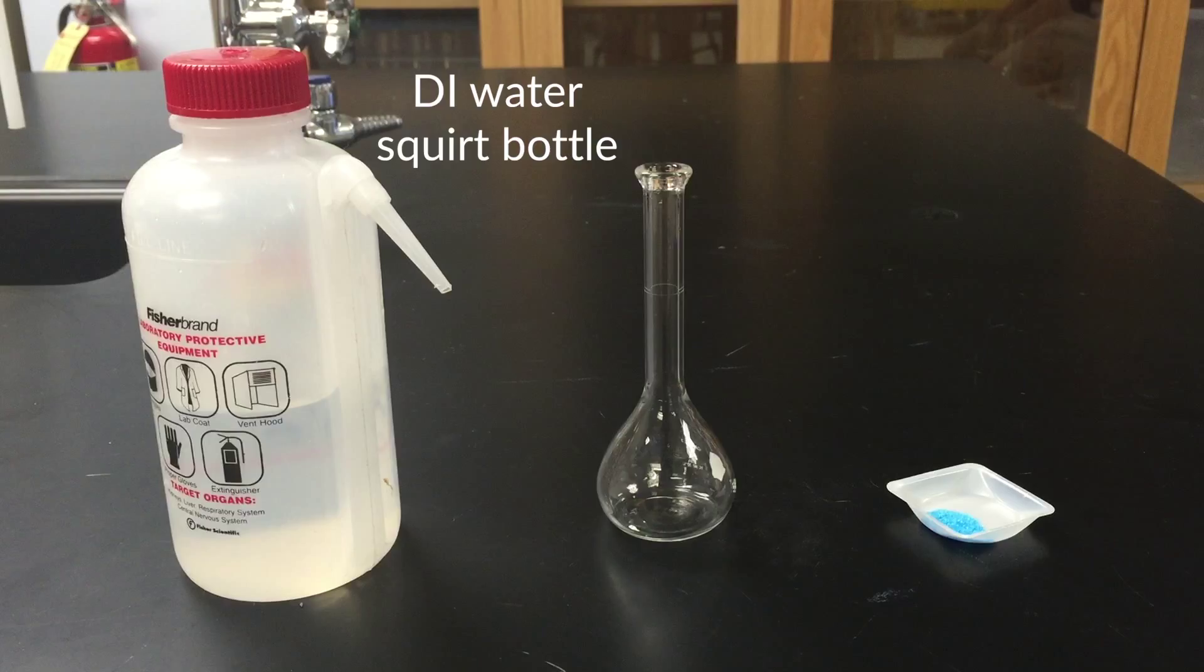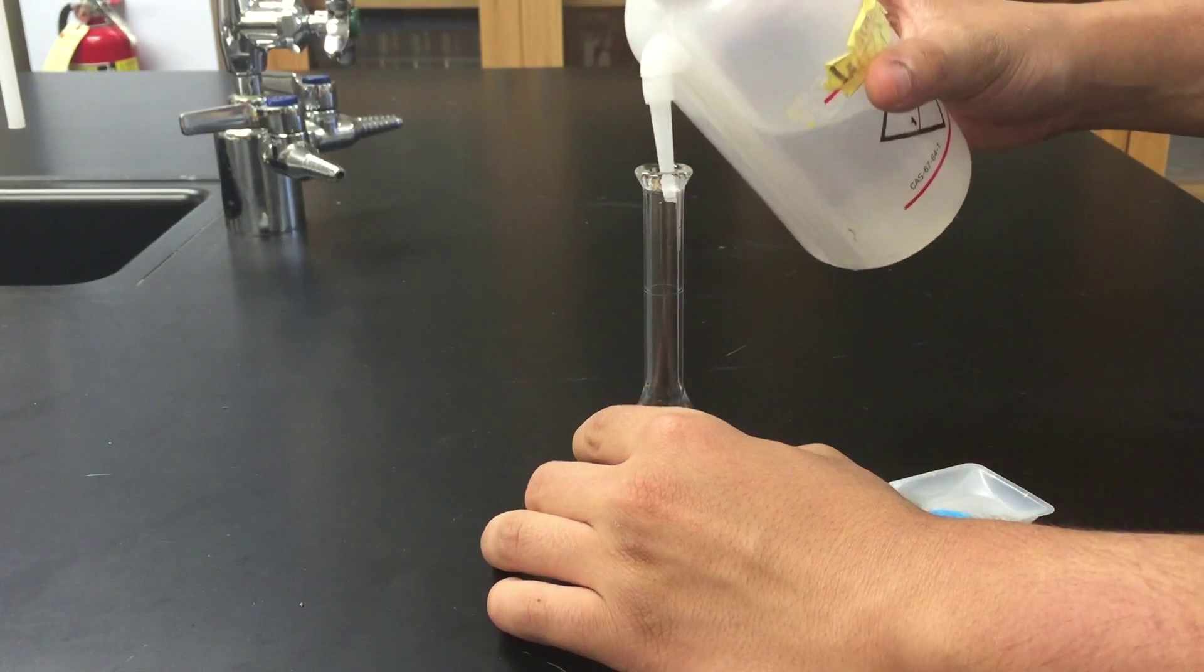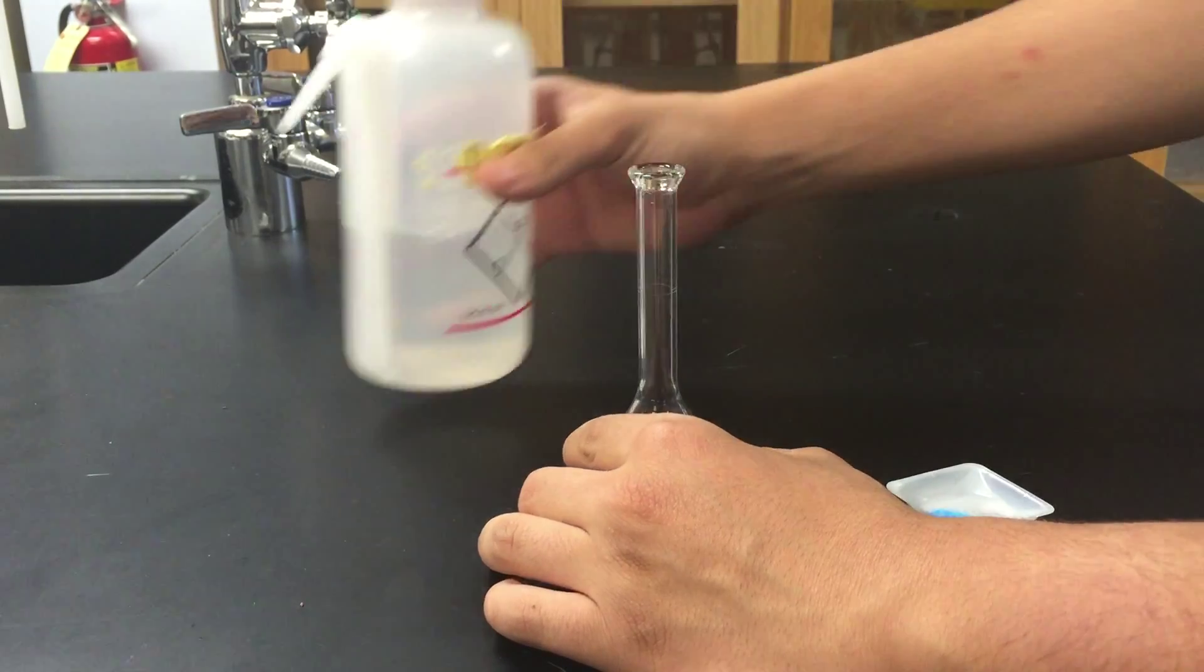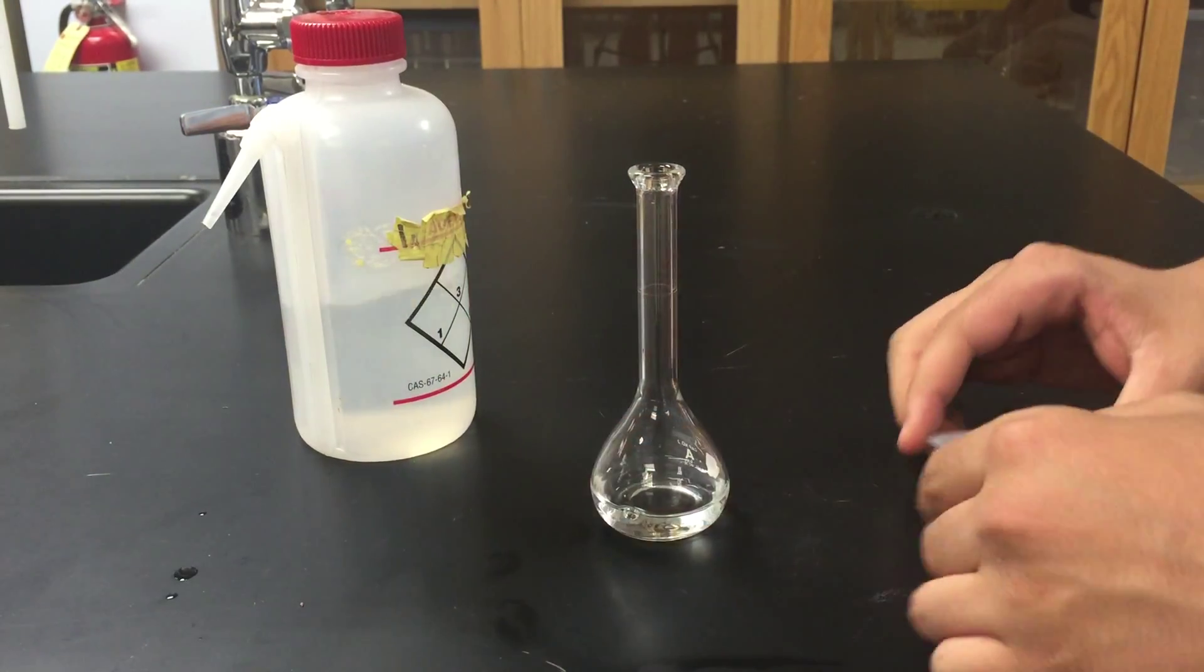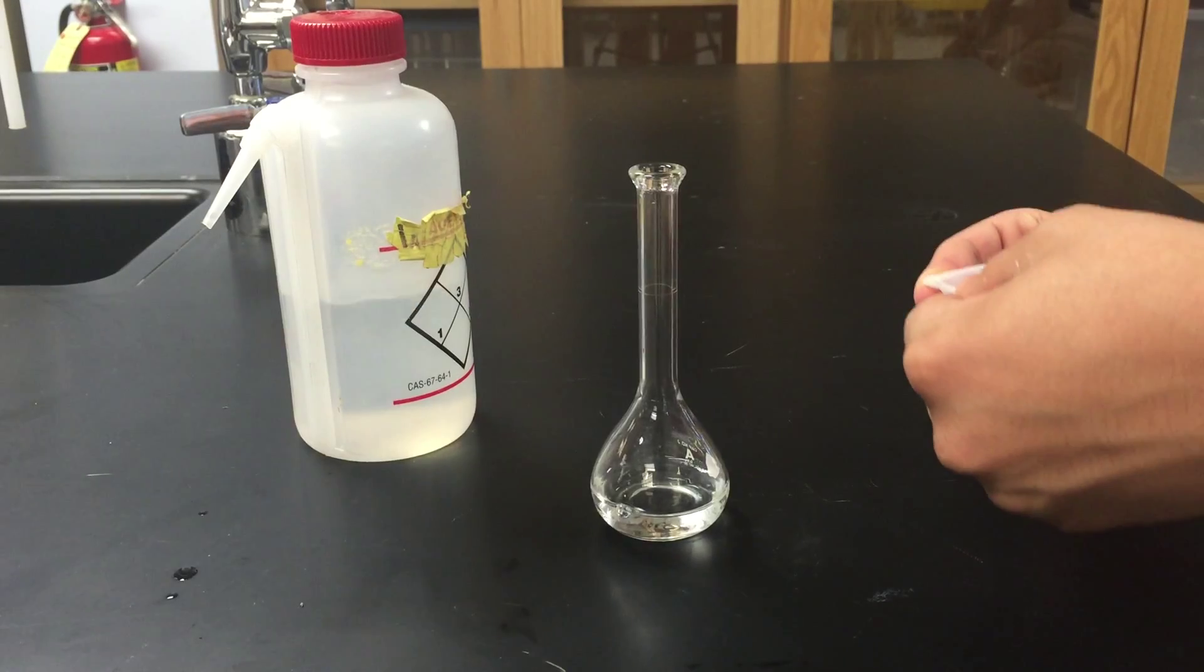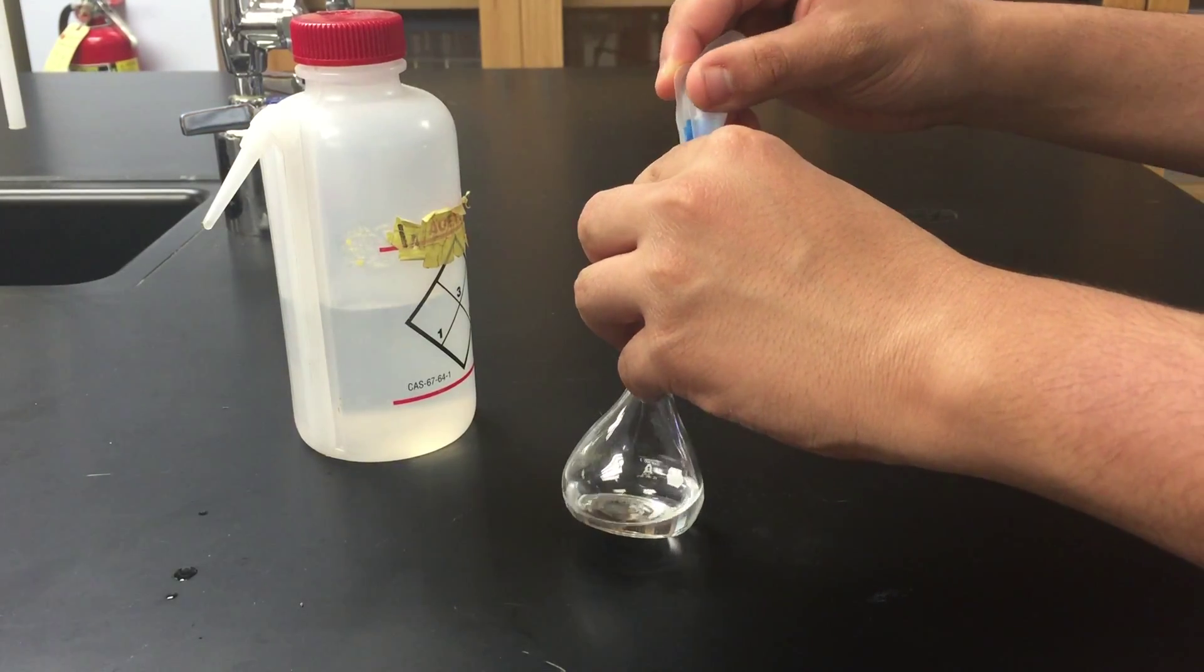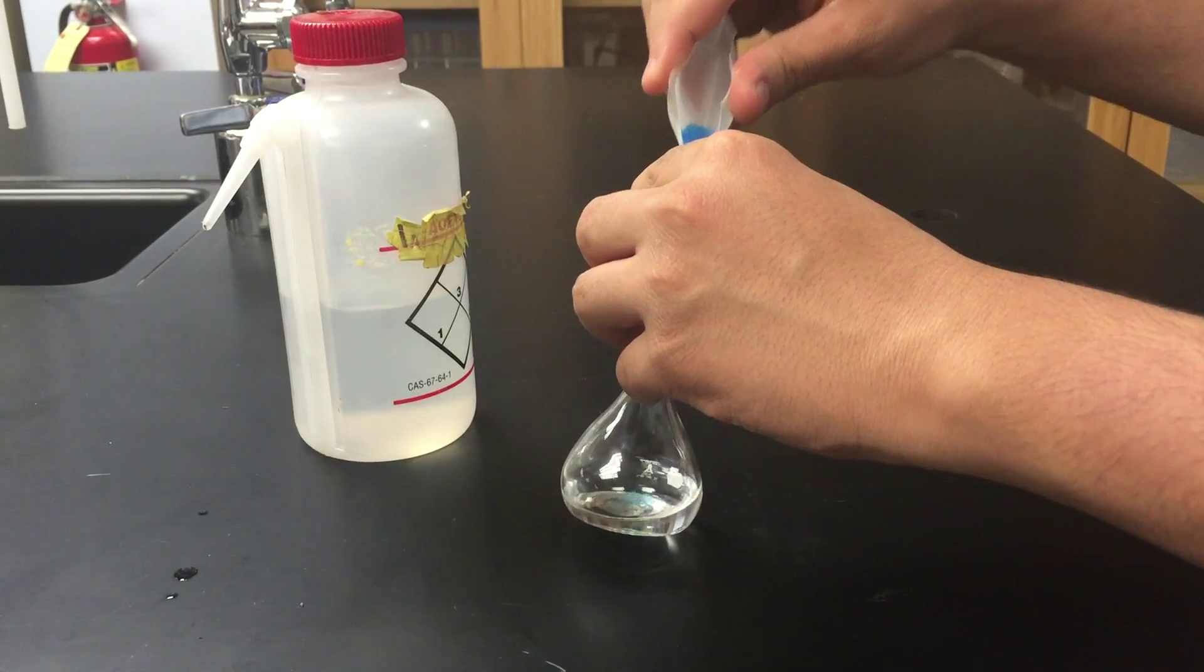Next, you need a DI water squirt bottle, a volumetric flask, and your solid substance from the previous step. Add some water to the bottom of the volumetric flask, and then very carefully add the solid substance into the flask. Creasing the weighboat beforehand can help ensure that none of it spills. If it does, you won't have the right amount of solid in your volumetric flask.